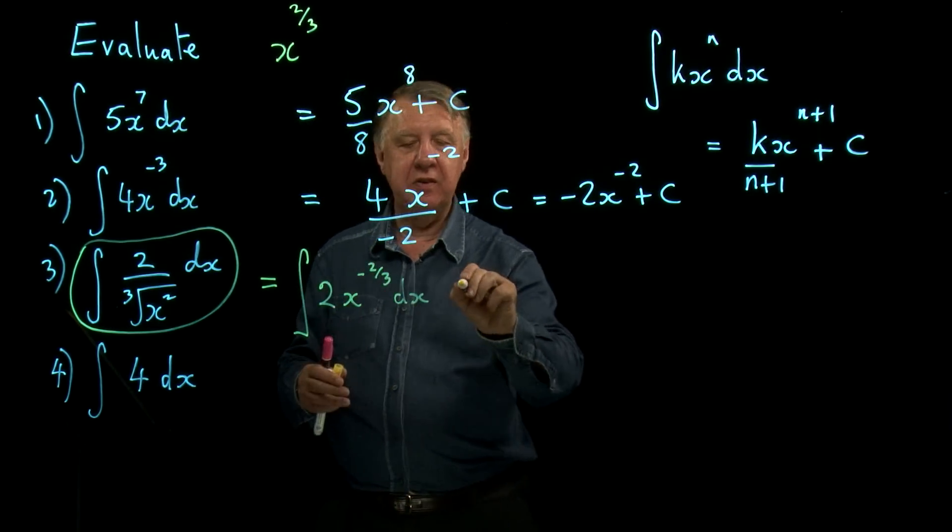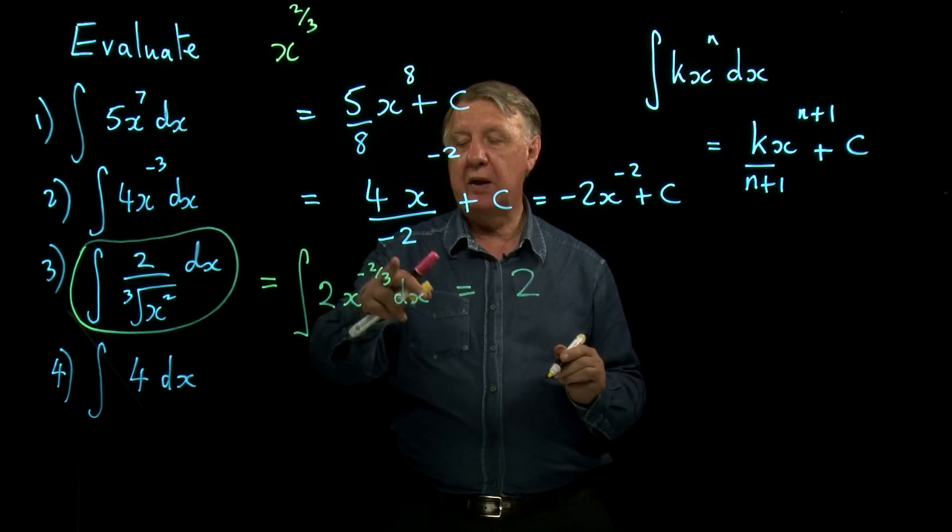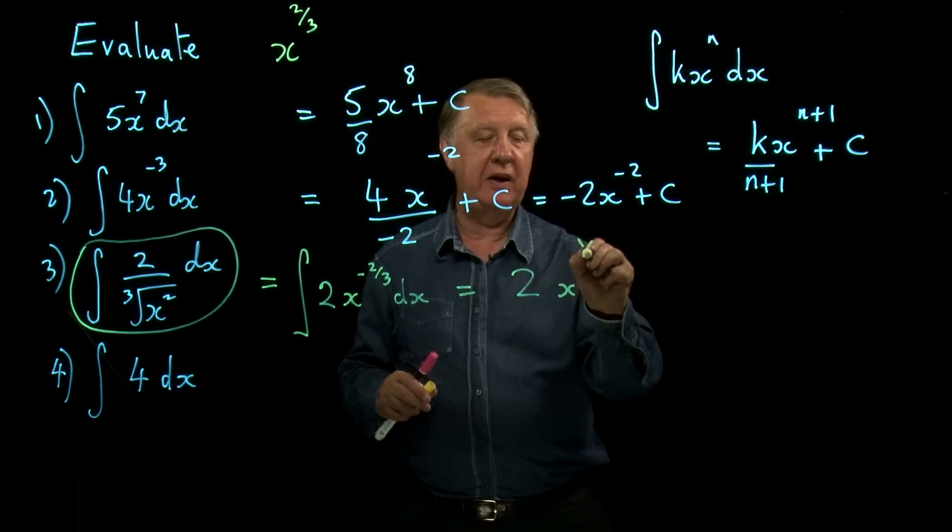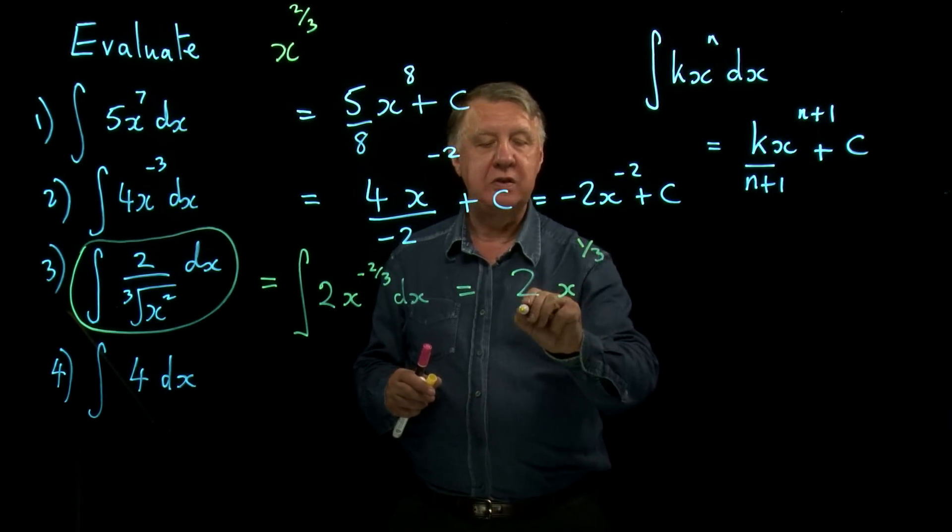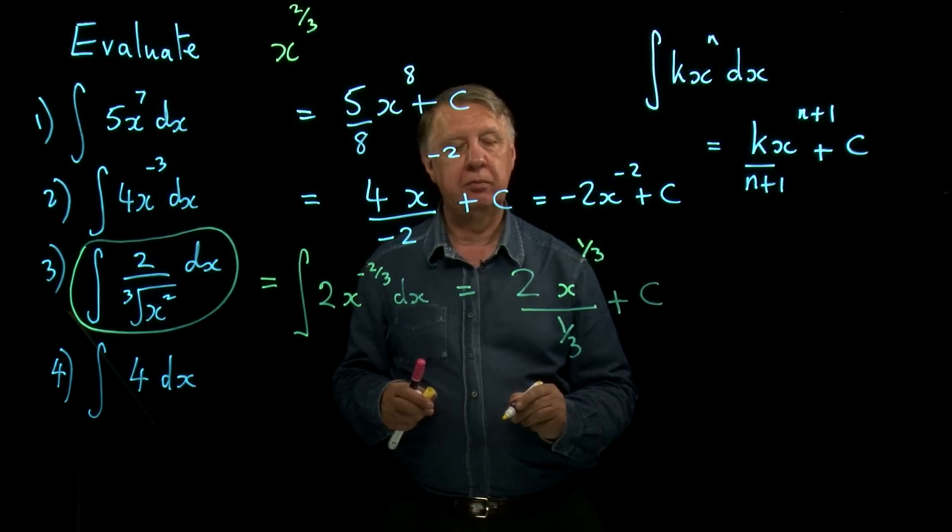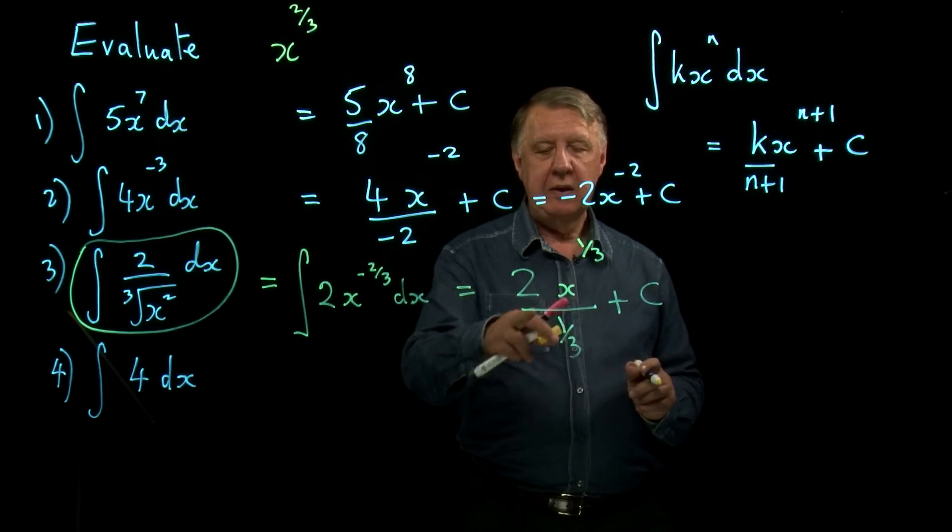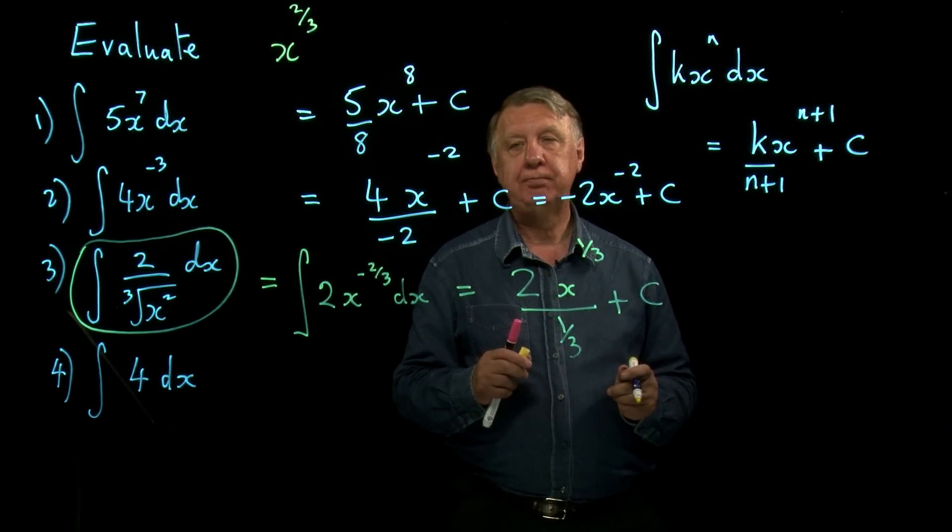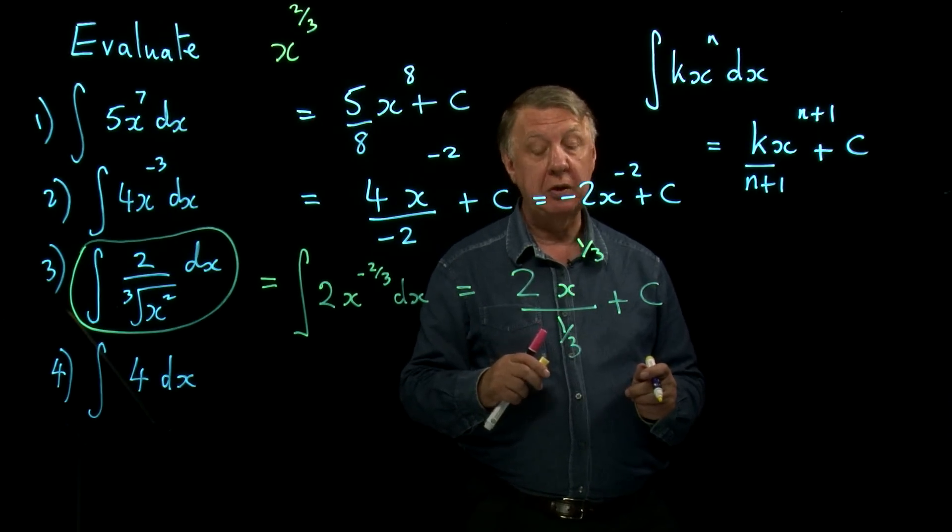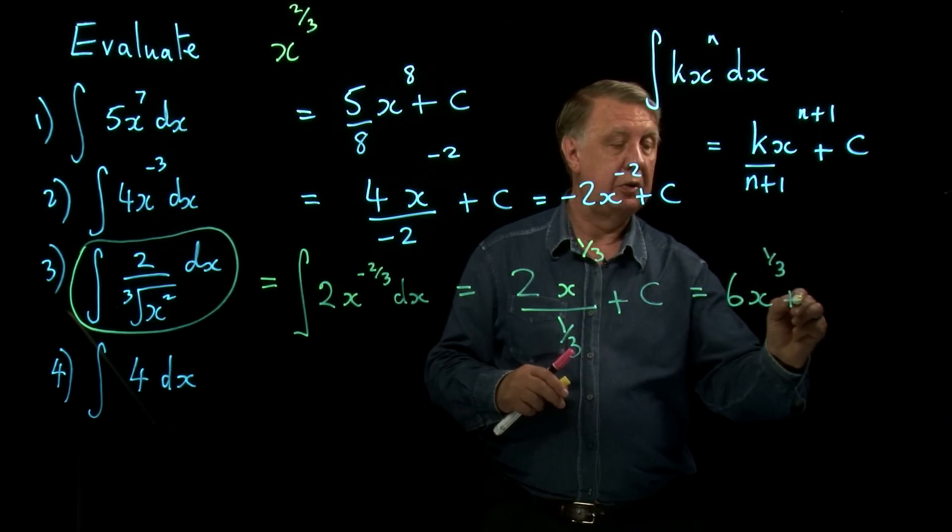Right, now remember the way I said to do this. K is the 2. We don't worry about that. Add 1 to the power. If I add 1 to negative 2 thirds I get plus 1 third. Divide by the new power. Plus c. See how important it is to really understand what you're writing down. How do I divide by a third? Yeah, that's right. I turn it upside down giving me 3 and multiply. So 2 times 3 is 6 x to the third plus c.